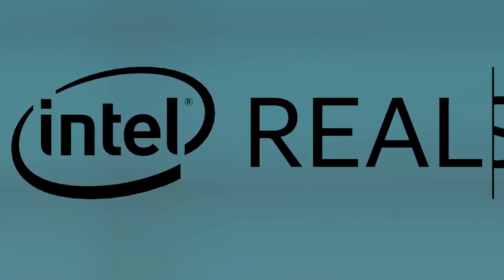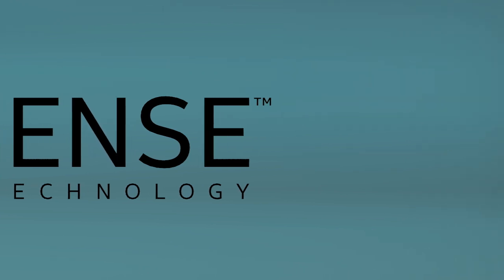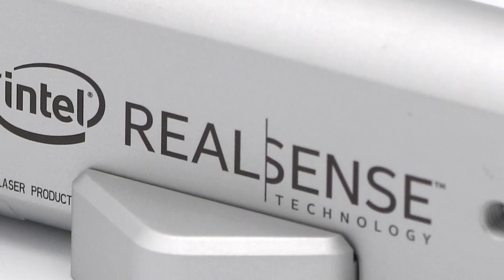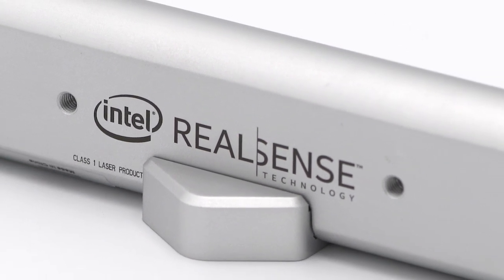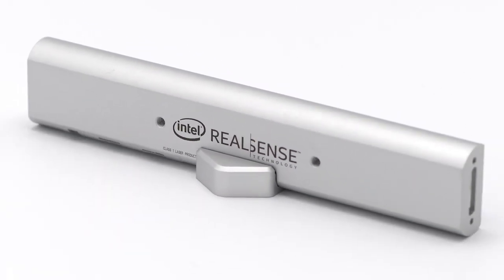The Intel RealSense depth camera SR305 is a reimagined version of our classic coded light depth technology. It's optimized to get you started with Intel RealSense depth cameras. For developers who are new to Intel RealSense products, this camera is the perfect low-risk place to start.